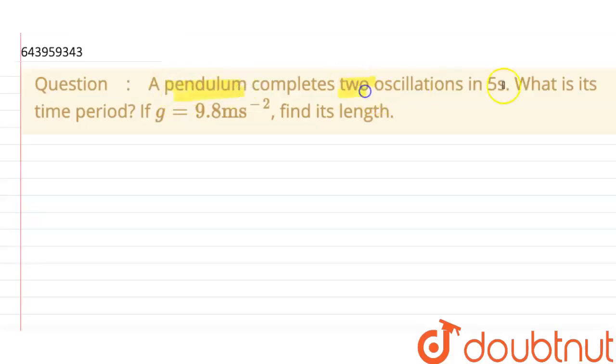Hello everyone. So the question is: a pendulum completes two oscillations in five seconds. What is its time period? If g is equal to 9.8 meters per second square, find its length.